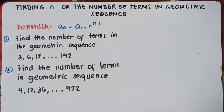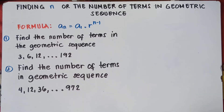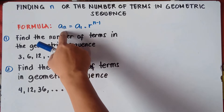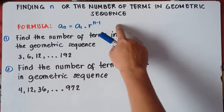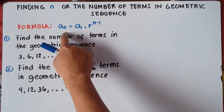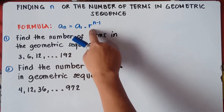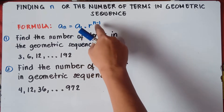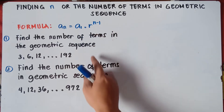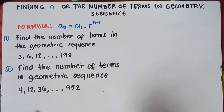So to find n or the number of terms, we will be using the formula. In the formula of geometric sequence, a sub n equals the first term times the common ratio raised to the power of n minus 1. So let's try number 1.